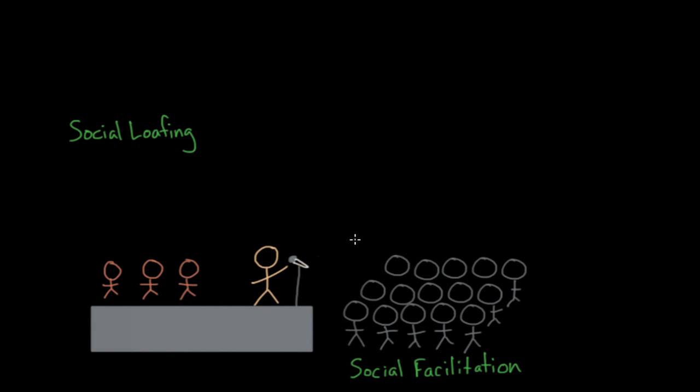Imagine you're in front of a group of people and you're about to give a presentation. You look out at the crowd and you see dozens of people and they're all looking at you, waiting for you to give your presentation. How will the presence of others affect your behavior? Will it help your performance or will it hinder it?